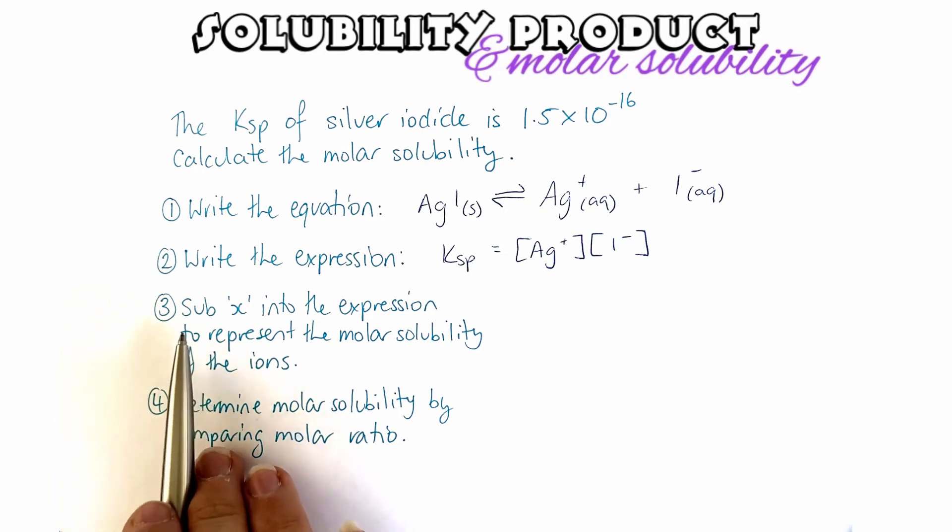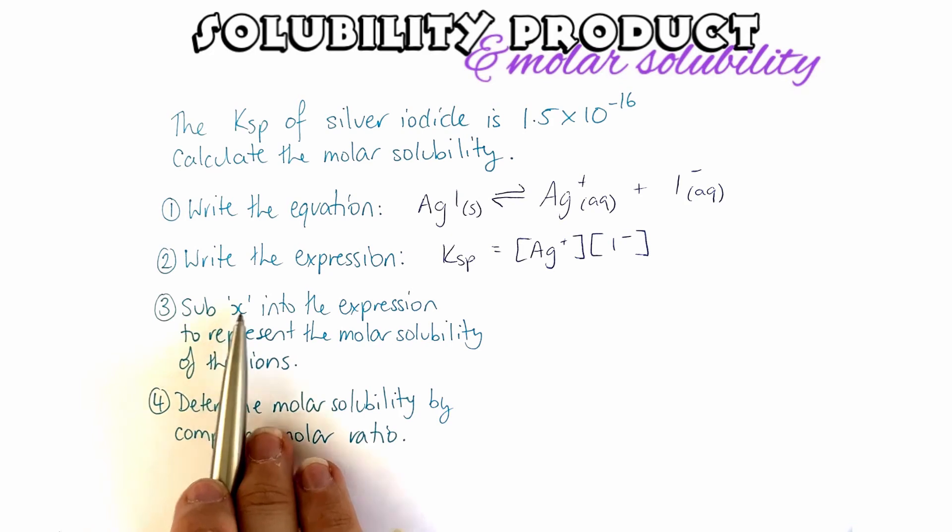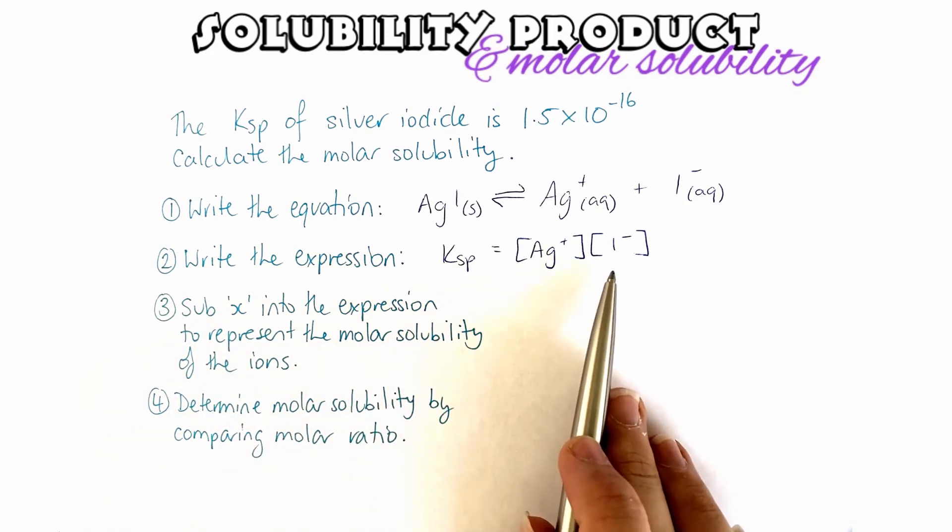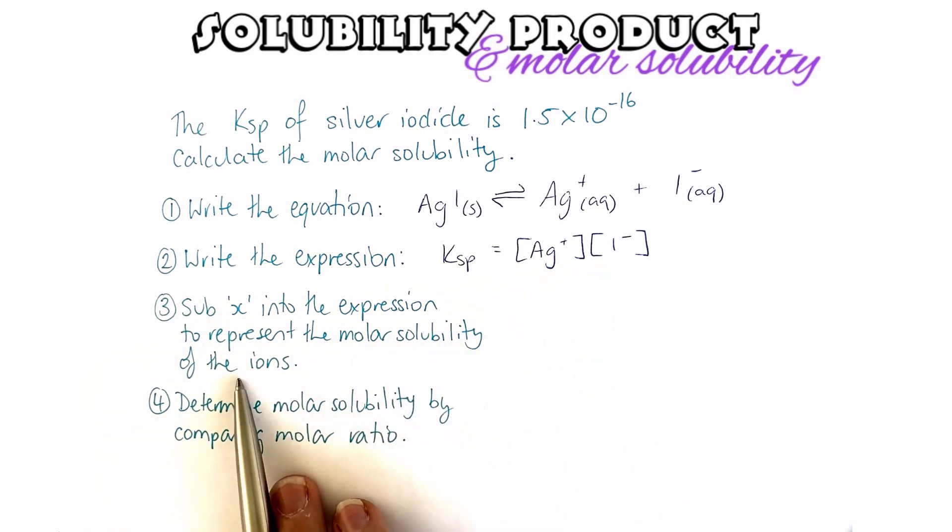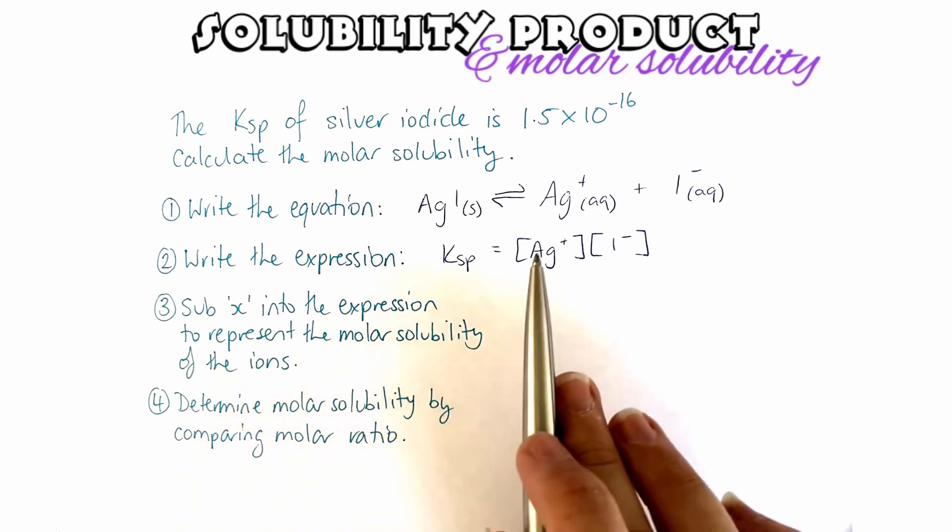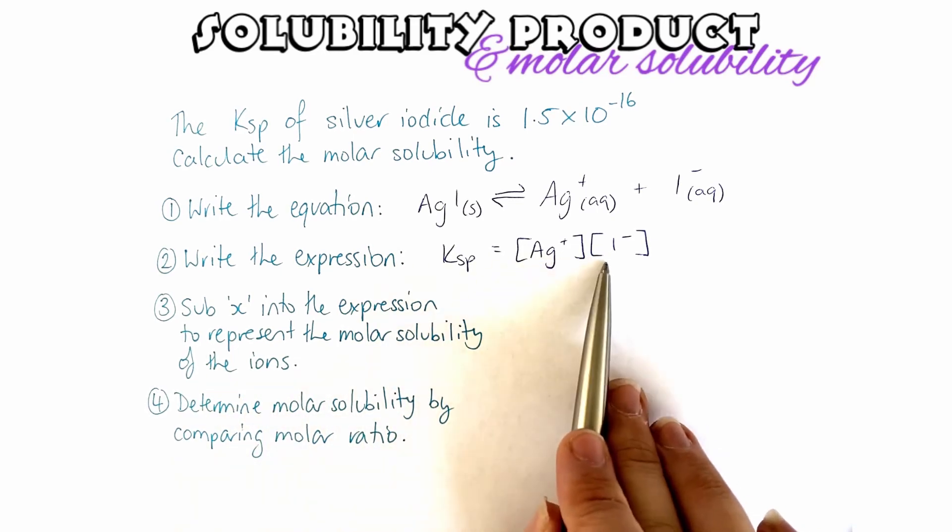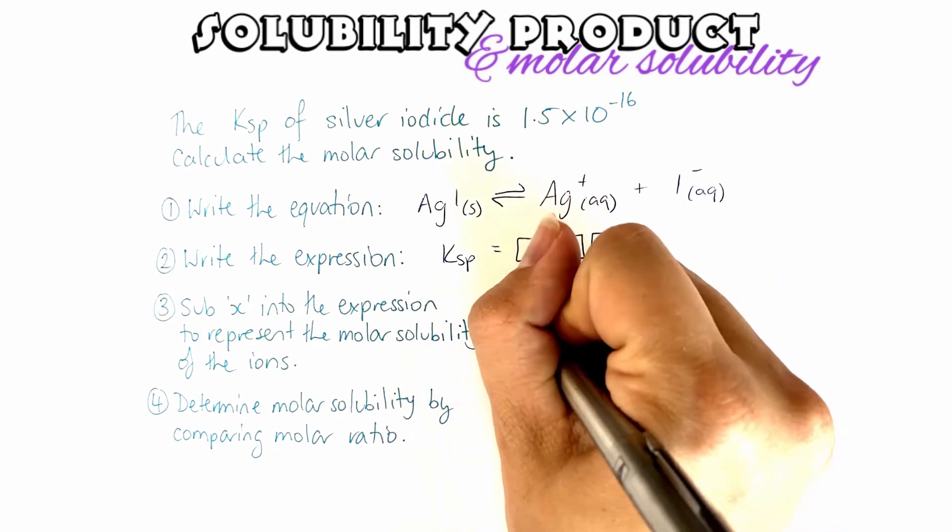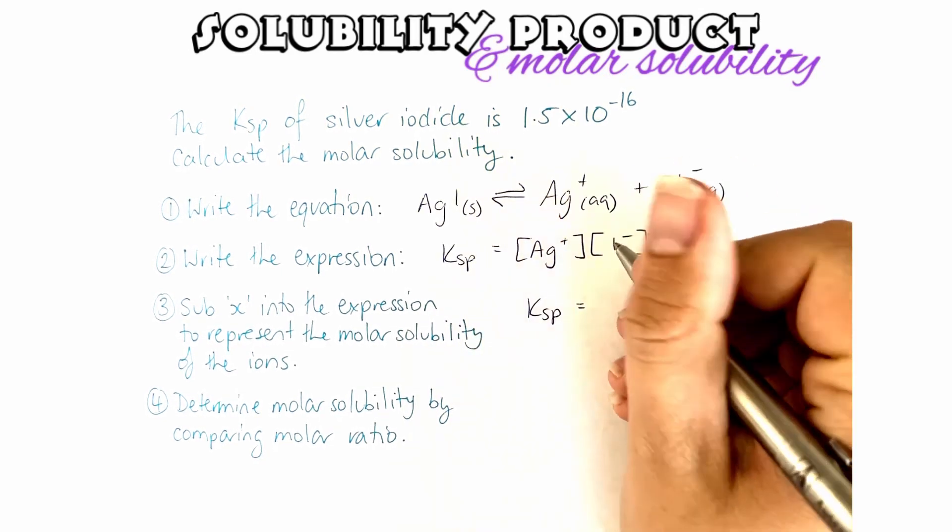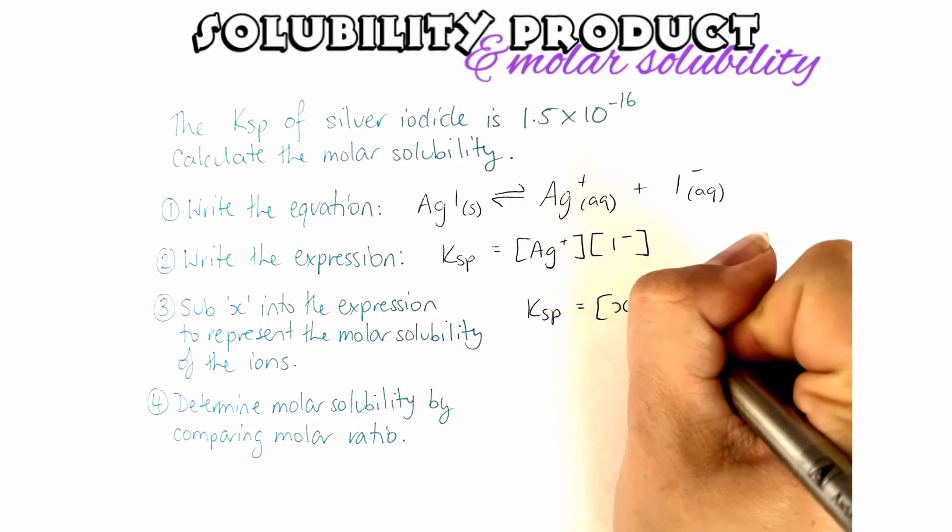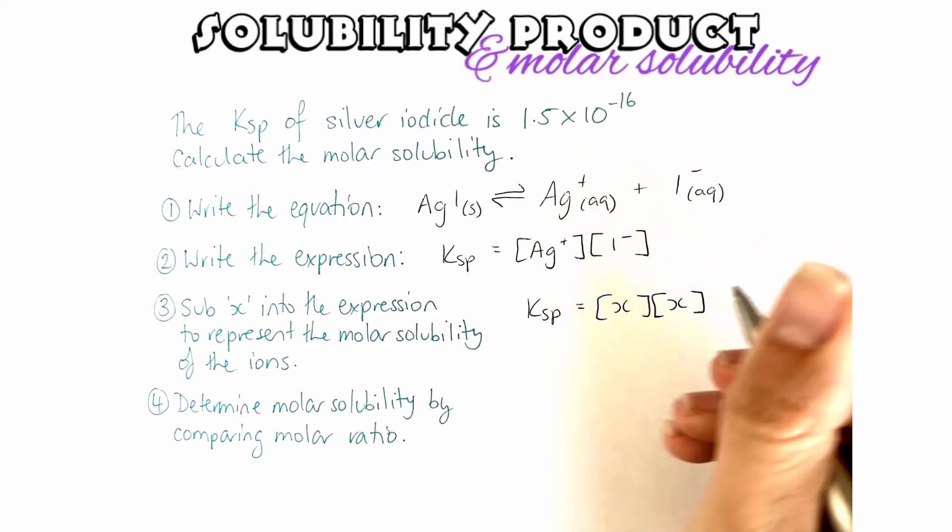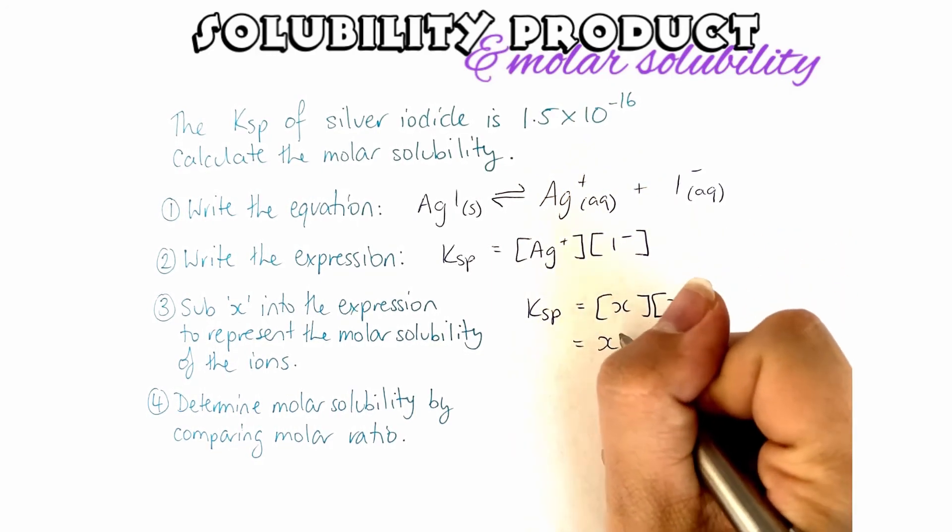Step number three, this is where it changes a little bit. We're going to substitute x into this expression to represent the molar solubility of the ions. Now, since they're both a one-to-one ratio, we can use x for both of them. So that means that Ksp, we're looking at x, the concentration of x times x, or another way of writing that would be x squared.